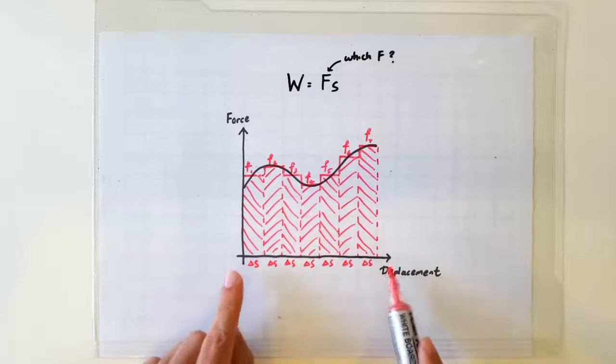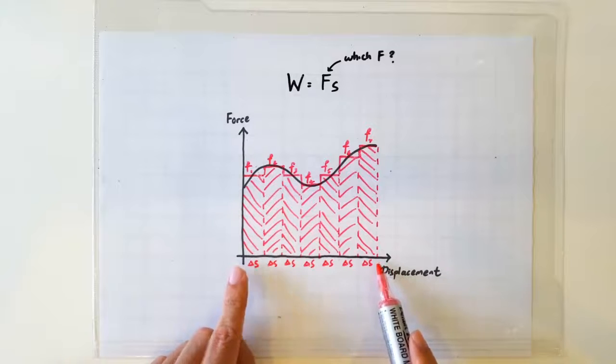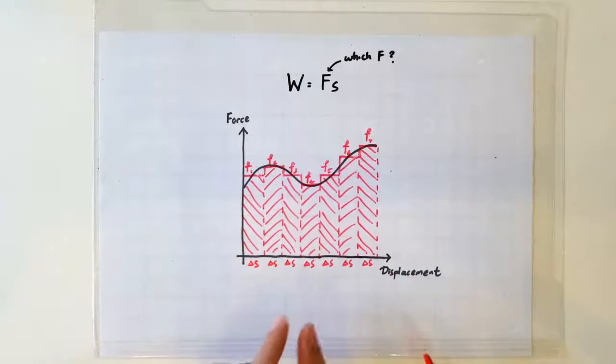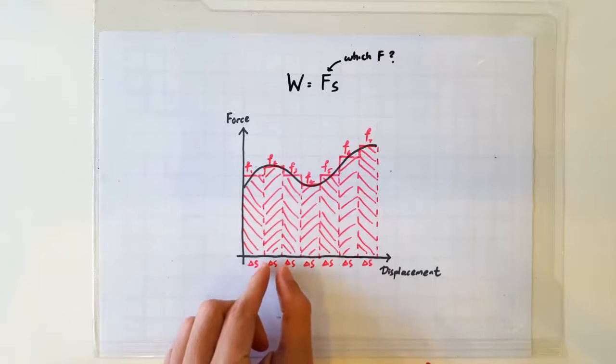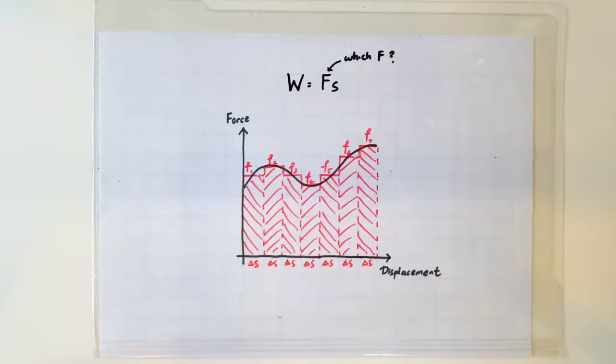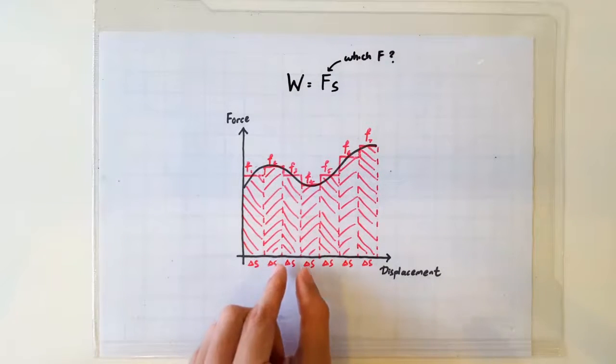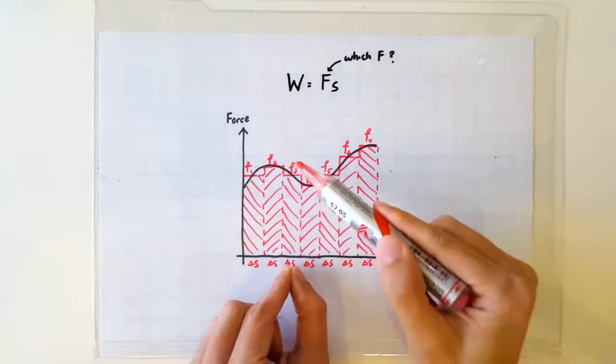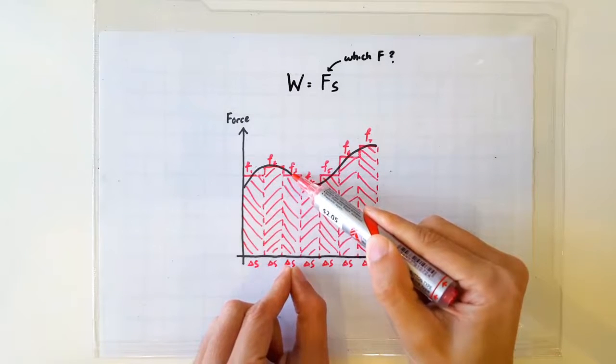What if we divide the total displacement by say 1 trillion, then every segment is going to become incredibly thin. So within every incredibly thin delta S, the value of the force is going to be practically constant.